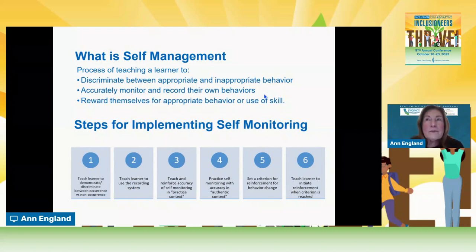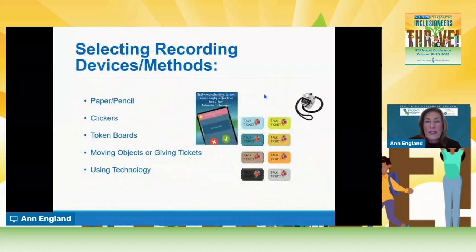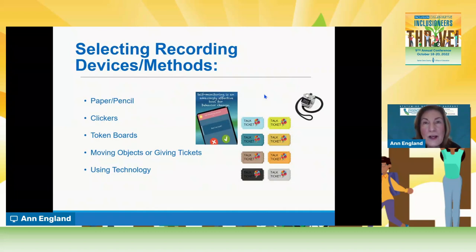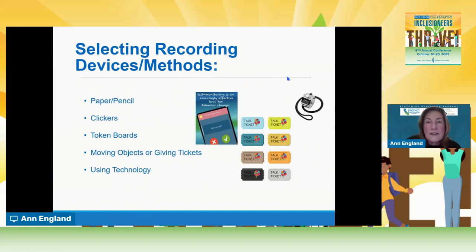The last thing we want is for any of our students to be prompt dependent—always needing someone else telling them what to do and when to do it. It's important to start working on teaching them to recognize, be aware, and then also monitor that. We can use different recording devices and methods; it doesn't have to be fancy. It can be paper and pencil, clickers, token boards, tickets, or technology. We always think about what's most interesting for our individuals with autism that will get them really engaging in this self-management, self-monitoring activity.